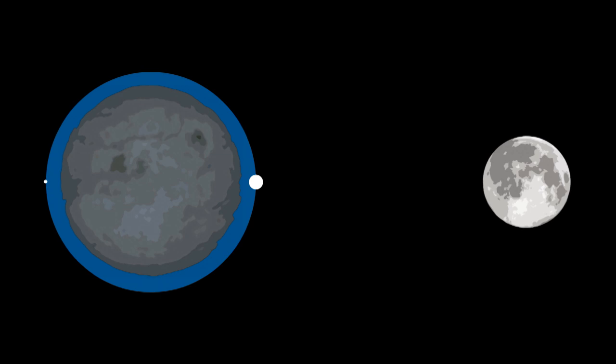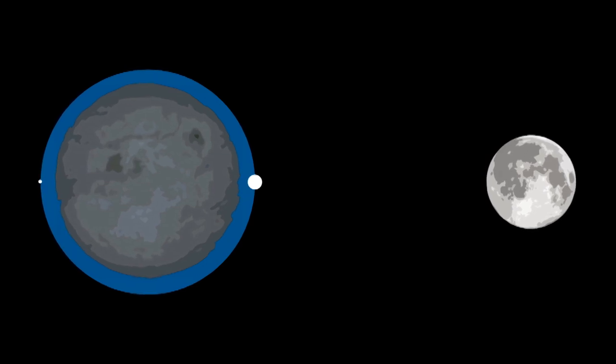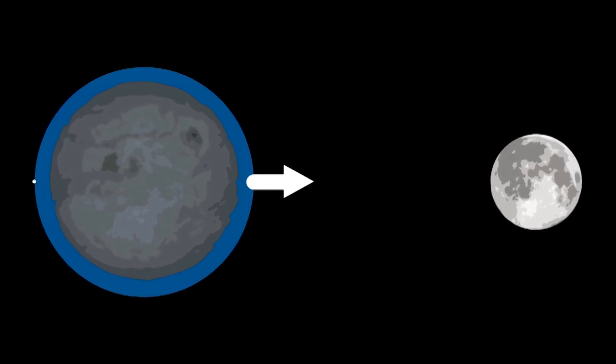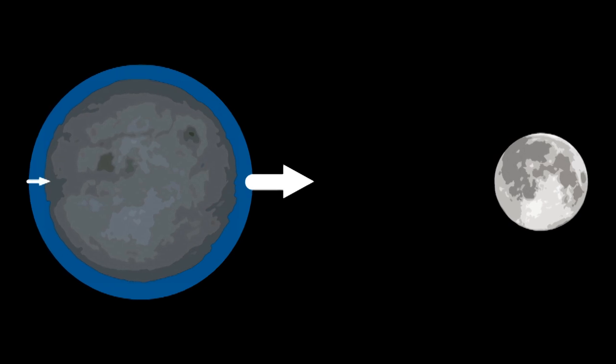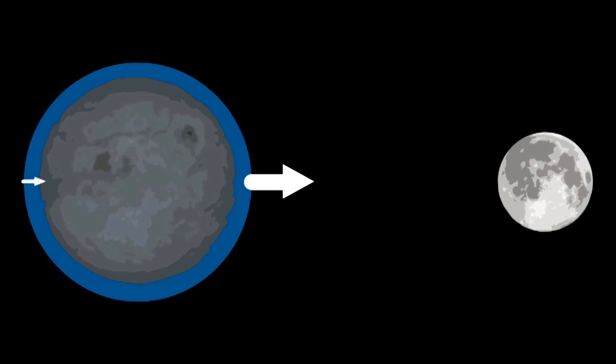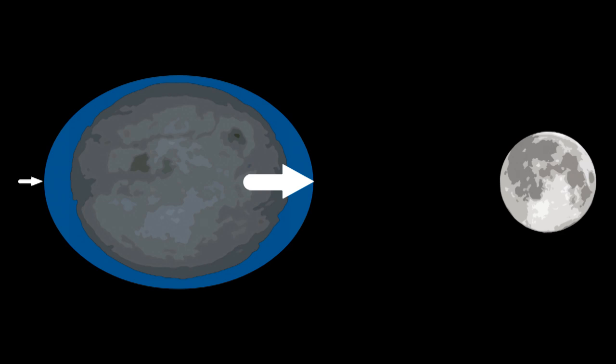The moon's gravity pulls on the Earth, but one side of the Earth is closer to the moon. So the moon pulls on that side harder and pulls less on the opposite side. The result is that there's a bulge near the moon.